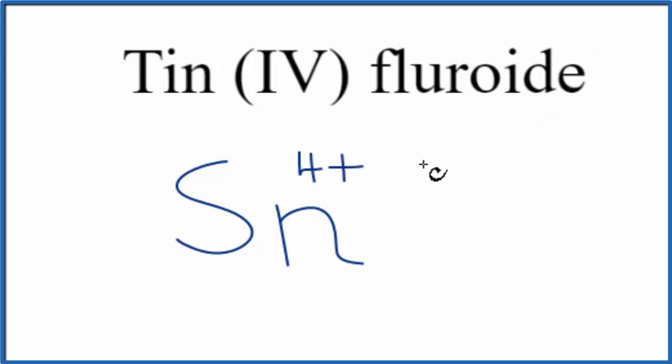Fluoride on the periodic table, that's just F. Tin's a metal, fluorine's a non-metal, so we have an ionic compound.